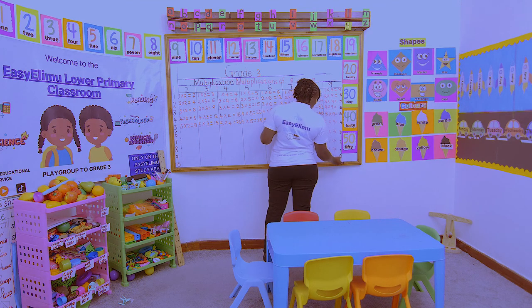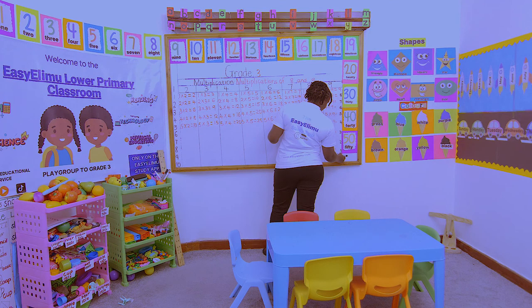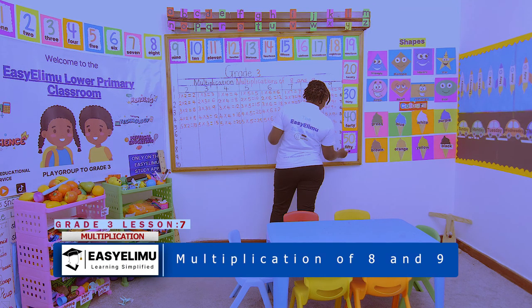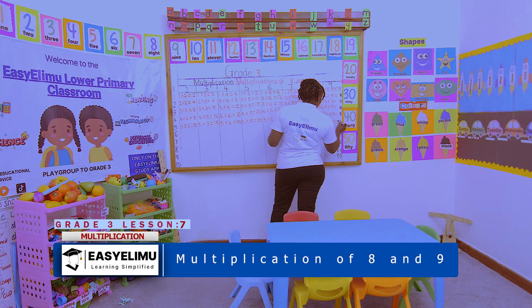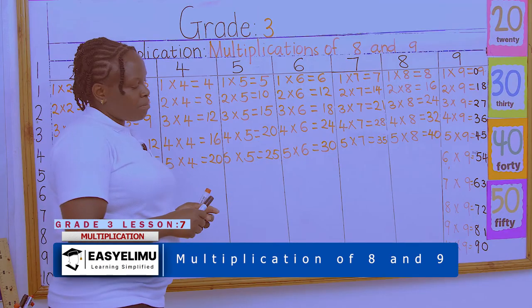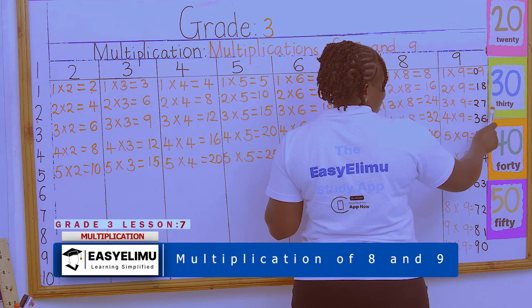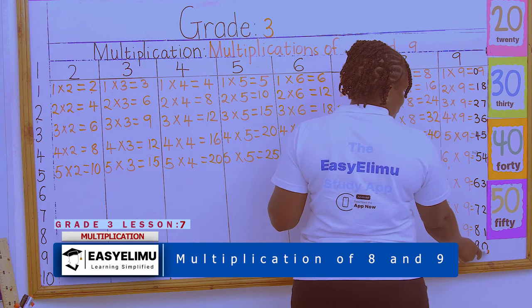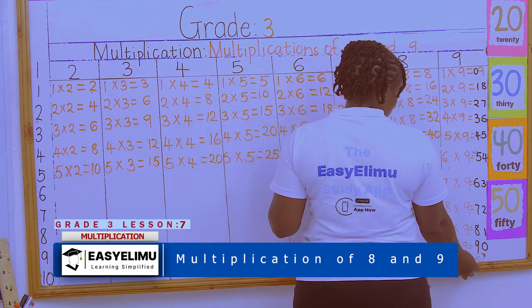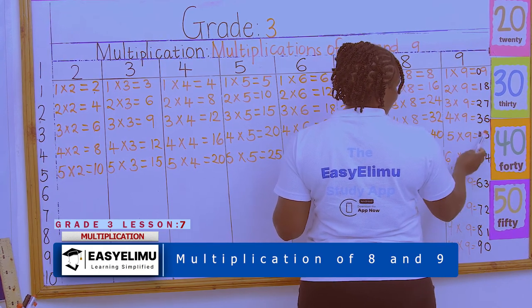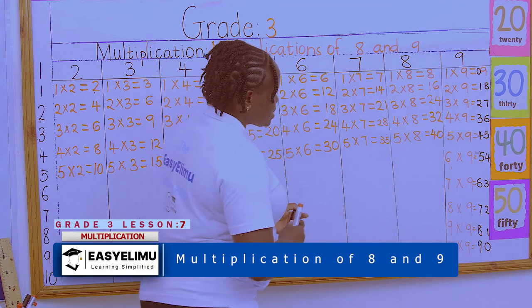So the answers interlock: write 0, 1, 2, 3, 4, 5, 6, 7, 8, 9 going up, and 9, 8, 7, 6, 5, 4, 3, 2, 1, 0 going down. This gives you all the multiples of 9.